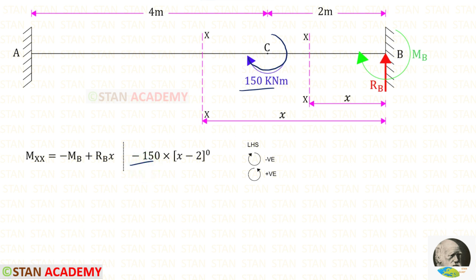We know that with a moment we should not multiply the distance, but in Macaulay's method we have to multiply the distance — there should be no change in the moment. For example, at point C if there is a concentrated moment, the distance is X minus 2. We apply the distance but to ensure no change, we raise it to the power zero. Since any number to the power zero equals 1, 150 multiplied by 1 still gives 150, so there is no change.